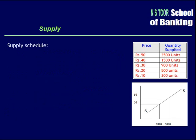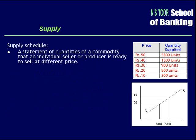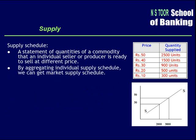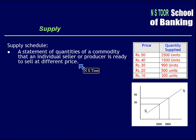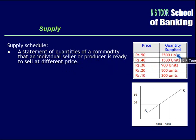Now, what is a supply schedule? A supply schedule is a statement of quantities of a commodity which an individual seller or producer is ready to sell at different prices. This is the supply schedule of an individual seller — an individual producer — showing the quantities this producer is ready to sell.